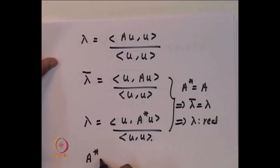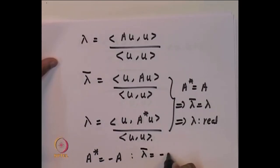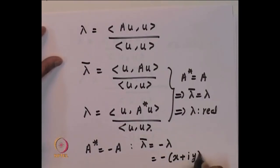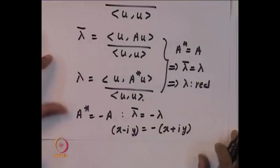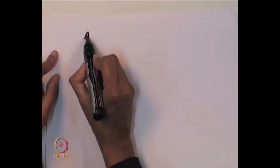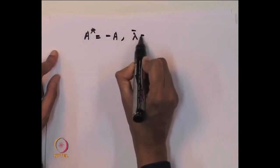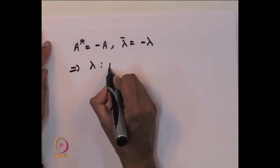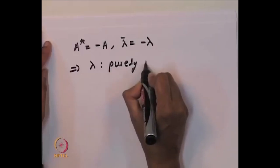Similarly, if A* = −A, then λ̄ = −λ. Writing λ = x + iy, λ̄ = x − iy, the condition λ̄ = −λ gives x − iy = −x − iy, so x = 0, meaning λ is purely imaginary or zero.